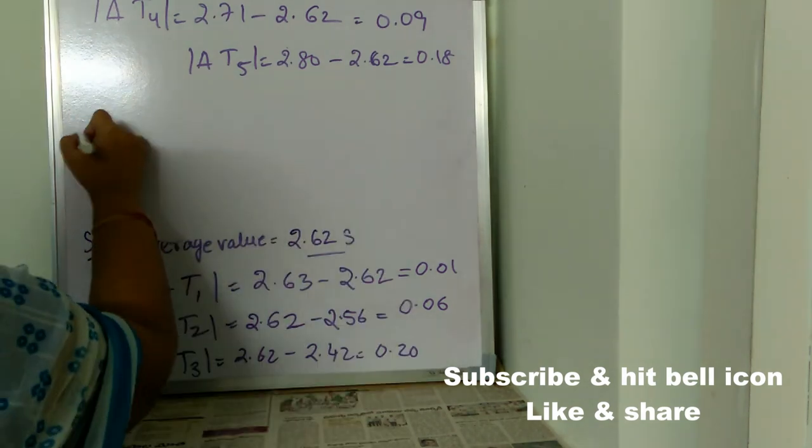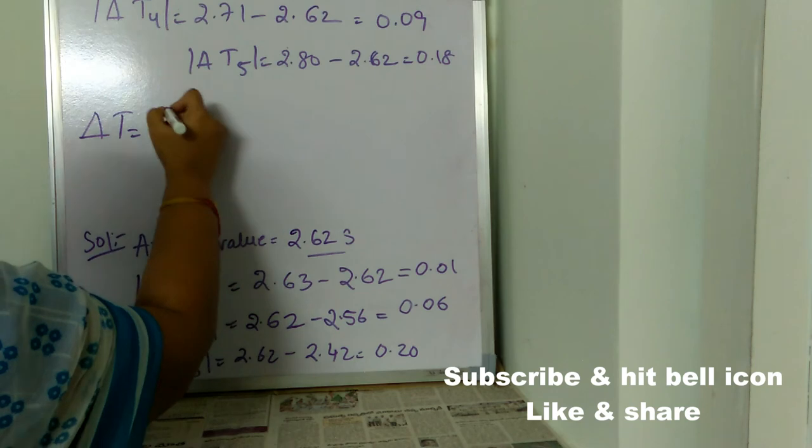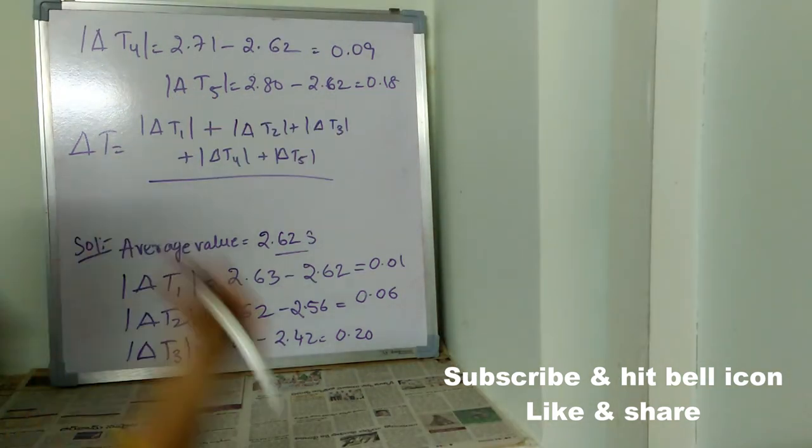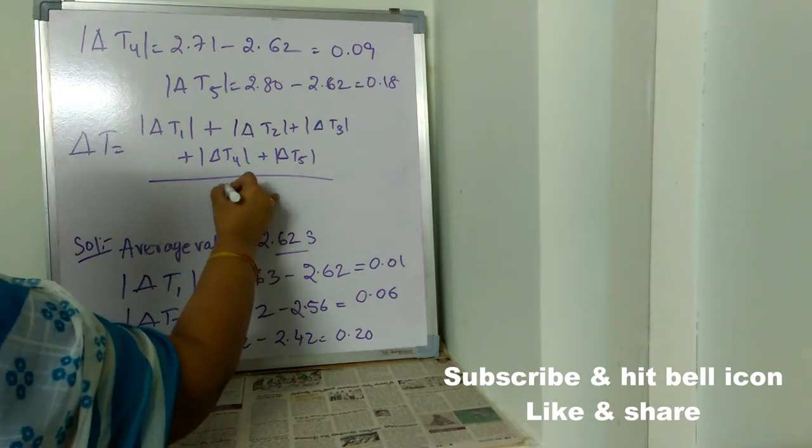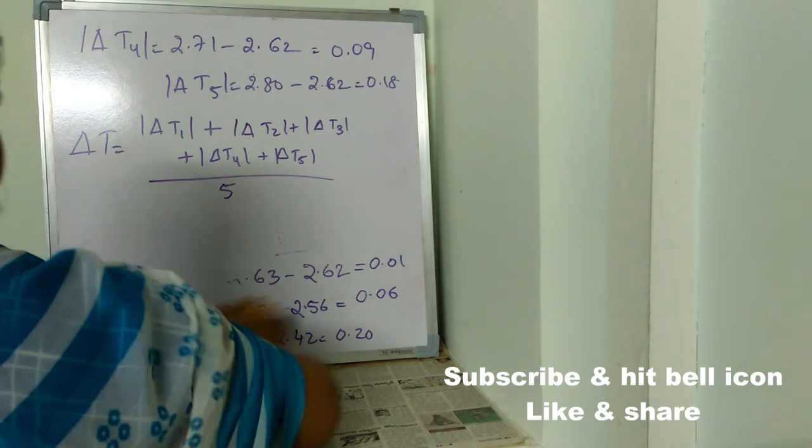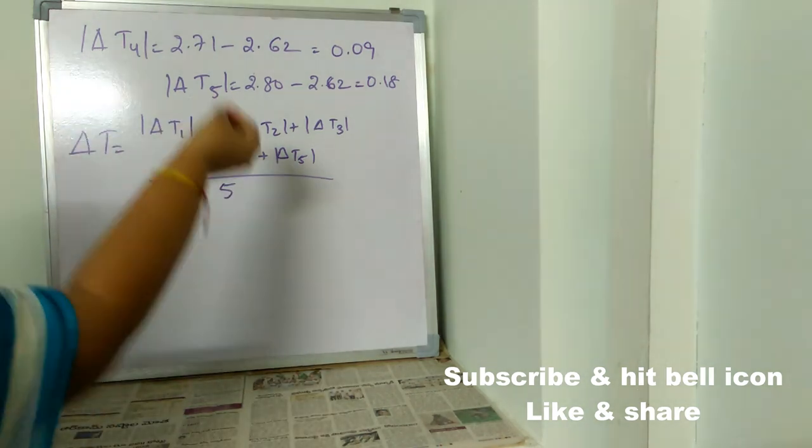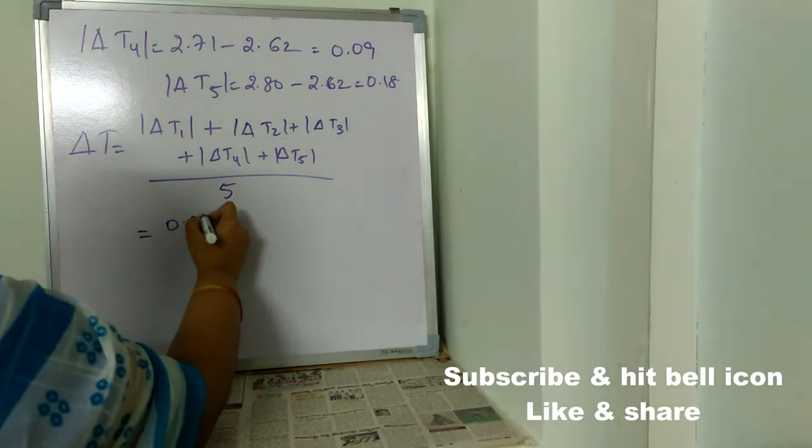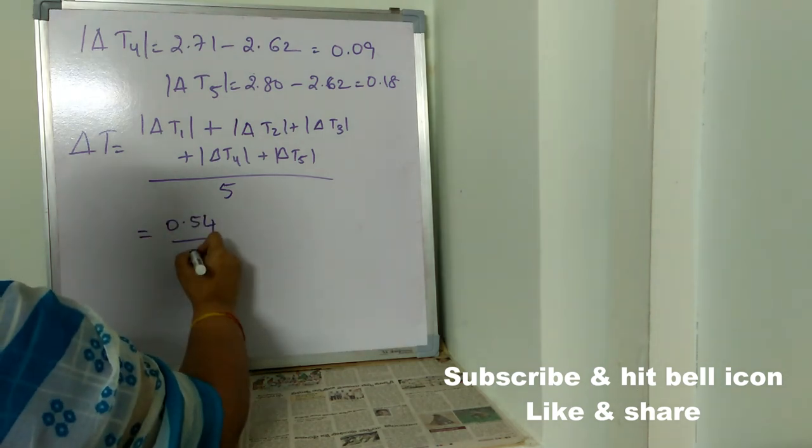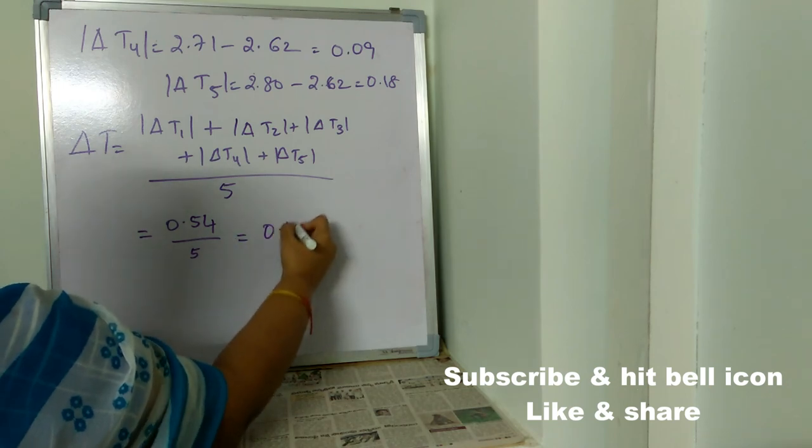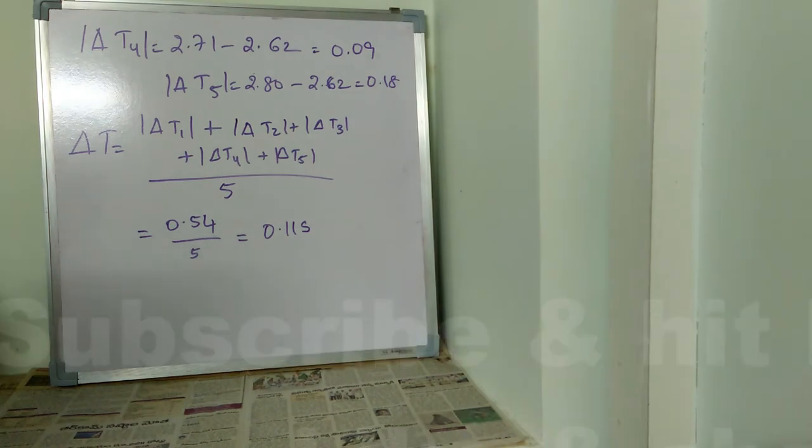Delta T is equal to delta T1 plus delta T2 plus delta T3 plus delta T4 plus delta T5 divided by number of values, five values. We already know the values of all this. So, just substitute and you will be getting 0.54 in the numerator and denominator as it is. And once we solve this, we will be getting 0.11 second. So, this is absolute average error.